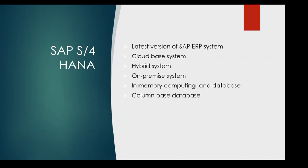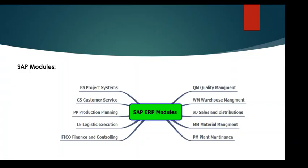S/4 HANA is much faster and easier compared to ECC. The S/4 HANA is the latest version, while the R3 system has not been discontinued yet. SAP has different modules representing different departments — for example, FICO represents Finance and Controlling, Logistics Execution covers warehouse management, and SD covers Sales and Distribution.